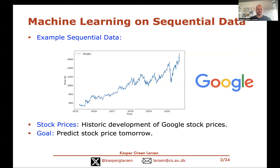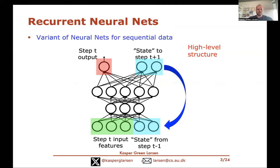The goal is to predict the value of the stock tomorrow. To do this, we introduced recurrent neural nets, where for each time step t you have some features, feed them into the neural net, it produces some output and a state which you forward to step t+1. So you get some output from the previous step that is fed back into the neural net, reusing the same input neurons for every single time step.